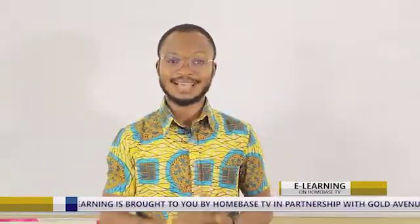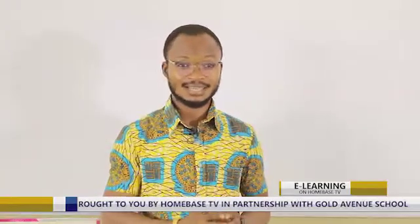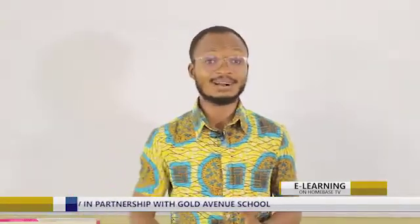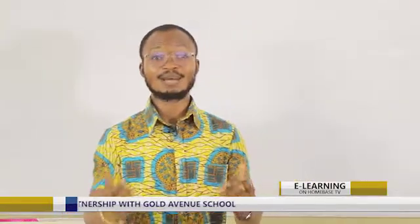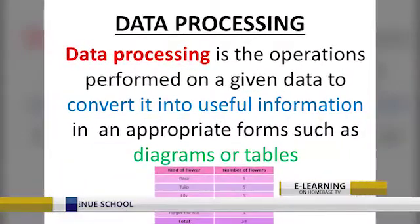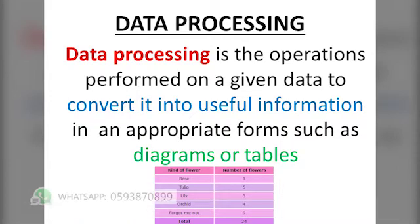I am very sure you understand data sources now. Now you know what data is and the sources of data. Let us move to what we can do with the data we have — from internal or external, we come to data processing. What is data processing? Data processing is the operations performed on a given data to convert it into useful information in an appropriate form, such as diagrams or tables.